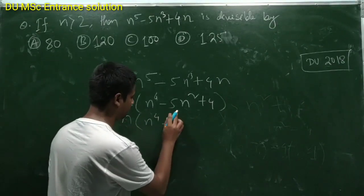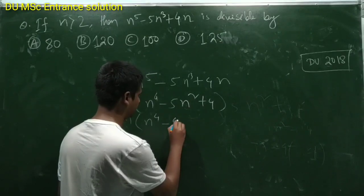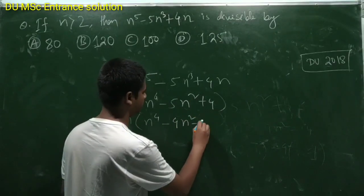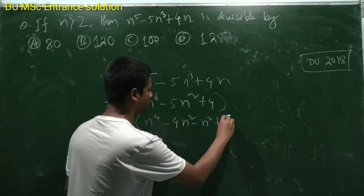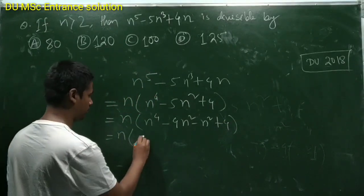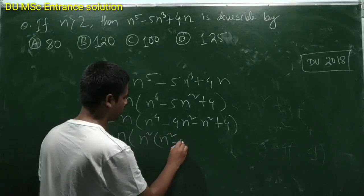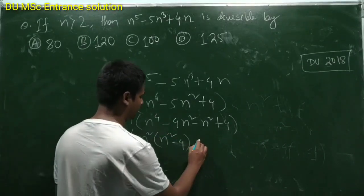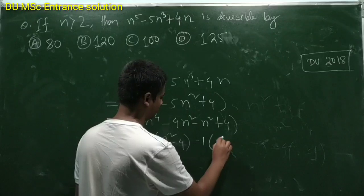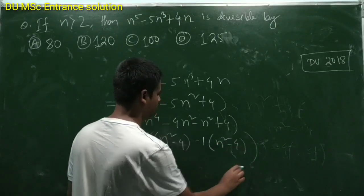If we make it like 4n squared minus n squared plus 4, so n into, take n squared as a common, so n squared minus 4, take minus 1 as a common, so n squared minus 4.